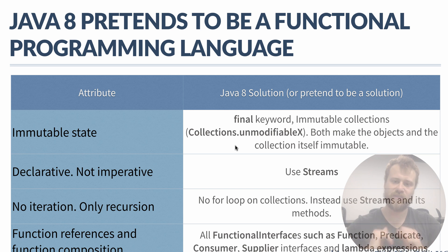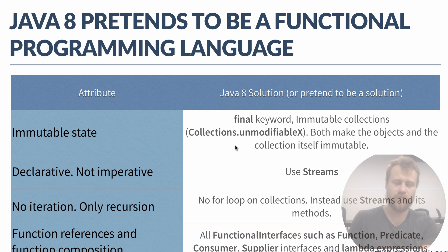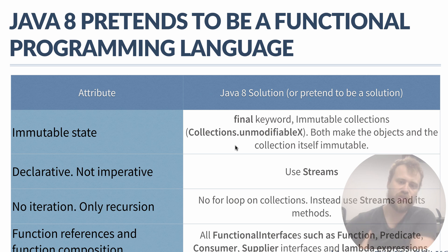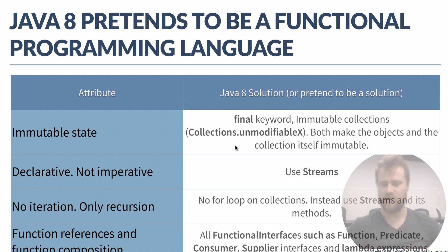However, this is not true immutability, because even if you cannot change the address value of a reference, you can still change the attributes at that address. So it is not correct immutability. The other solution is Collections — if you invoke Collections.unmodifiableList() and pass a list instance into this method, the list is protected from modifications.